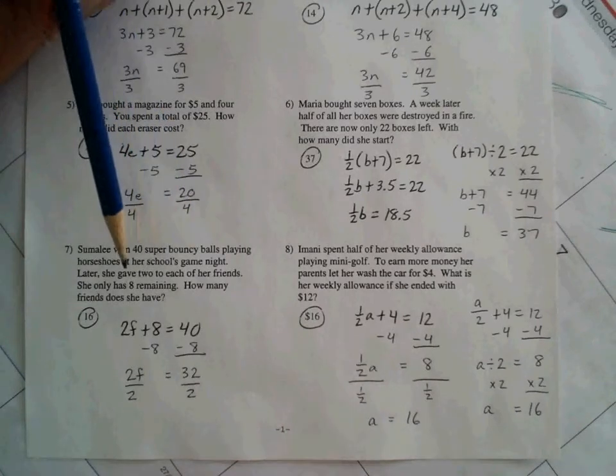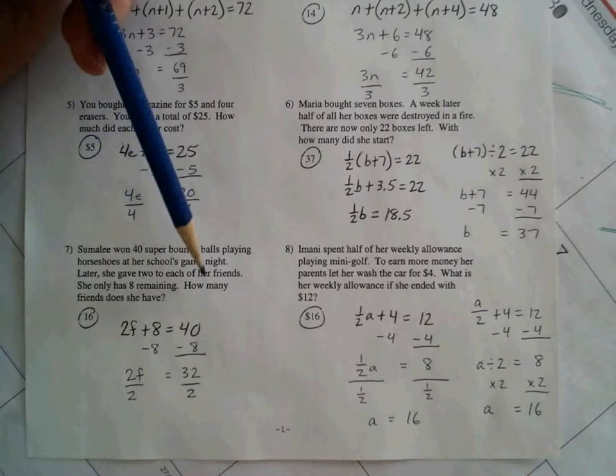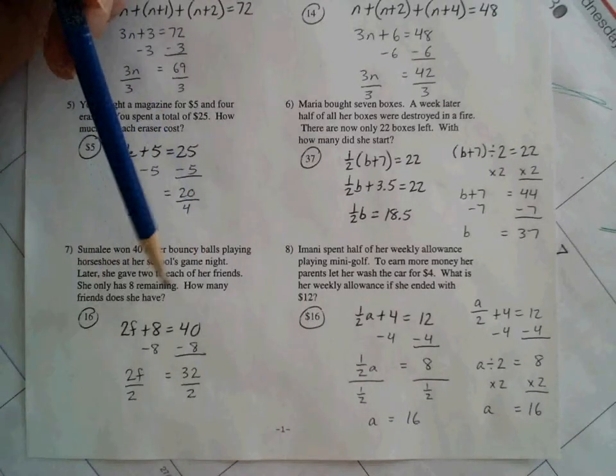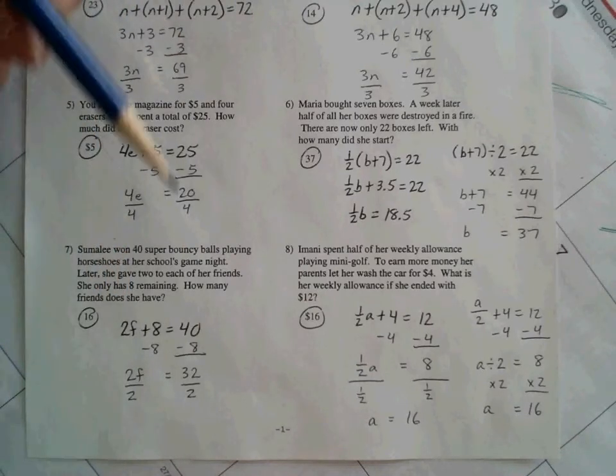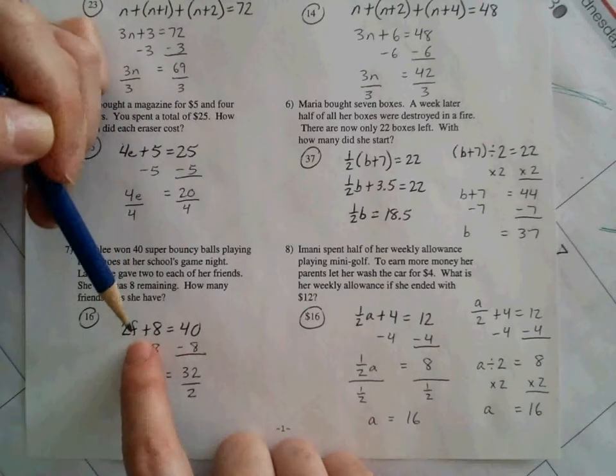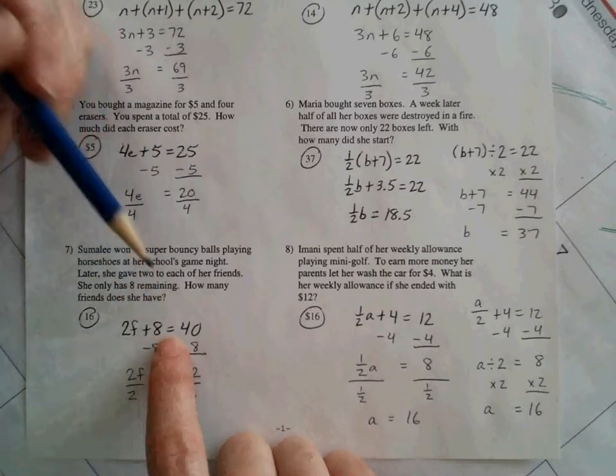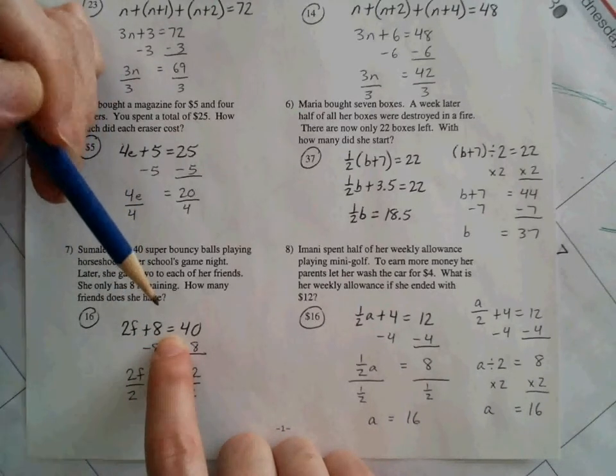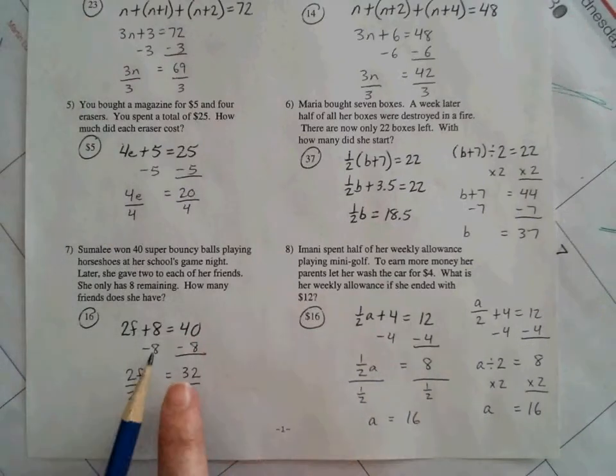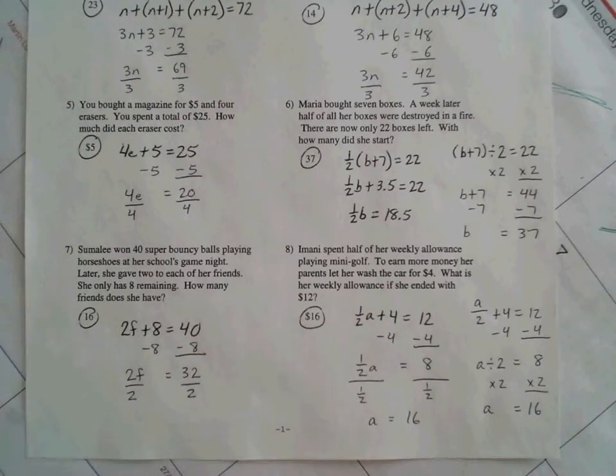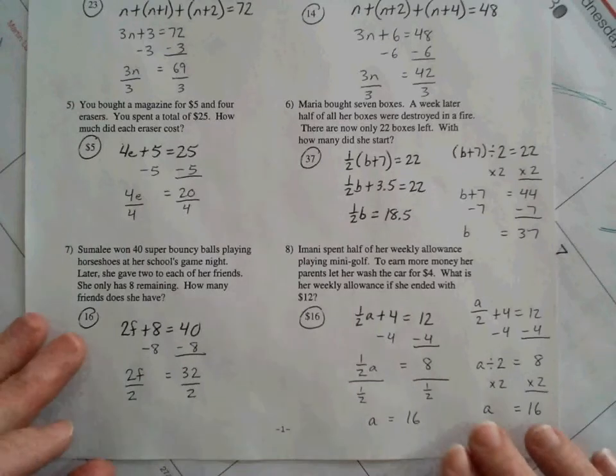This one down here. Let's see, you had 40 bouncy balls. Let's see, you gave 2 to each of her friends. She only has 8 remaining. So how many friends did she have? So she gave 2 to each of her friends. We're trying to figure out how many friends she had. So 2 times the amount of friends she had, plus the 8 she had remaining, gave her a total of what she started with, which was 40. So that could be your equation here. When you solve it, you subtract 8 on both sides. And then divide by 2 to get your final answer of 16 friends.